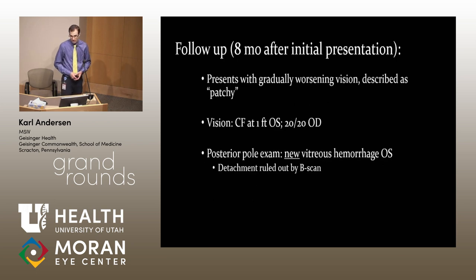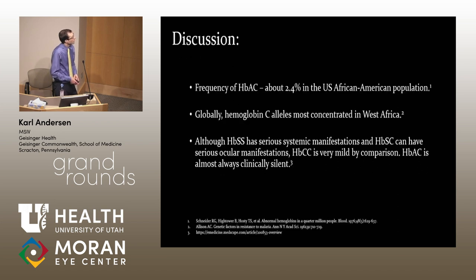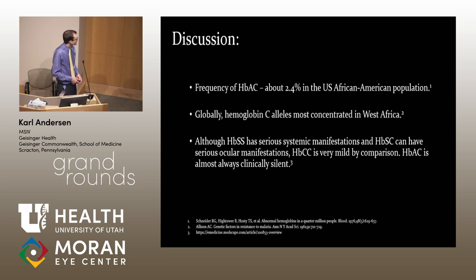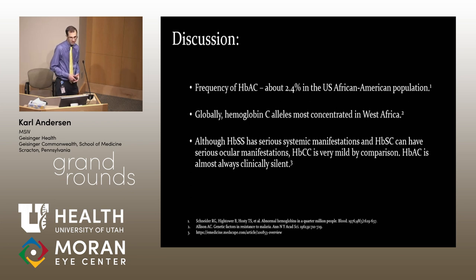Eight months later, he presented with a new hemorrhage in the left eye — count fingers at one foot — and a detachment was ruled out by B-scan. To discuss this disease entity: hemoglobin AC is pretty uncommon, occurring in about 2.4% of the U.S. African-American population. It is almost always asymptomatic, and a lot of those alleles come from West Africa. Hemoglobin SS — sickle cell disease — has serious systemic manifestations, and hemoglobin SC can have serious ocular manifestations. But hemoglobin C trait is almost always asymptomatic, and hemoglobin C disease, if it presents, is very mild.